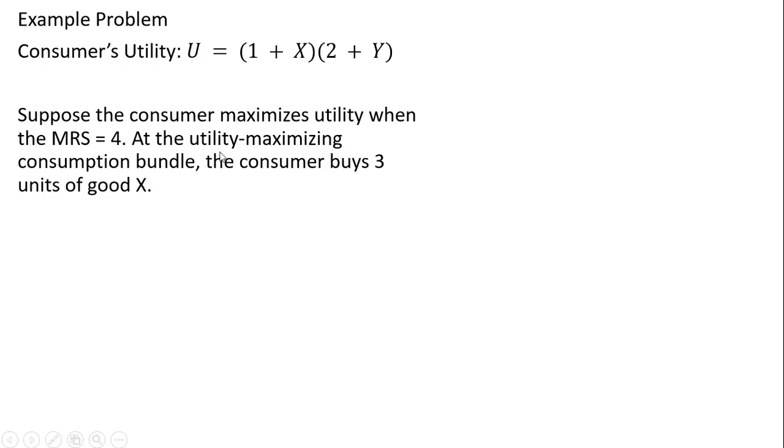And suppose that the consumer is maximizing utility when the marginal rate of substitution equals 4. At the utility maximizing consumption bundle, the consumer buys 3 units of good X.